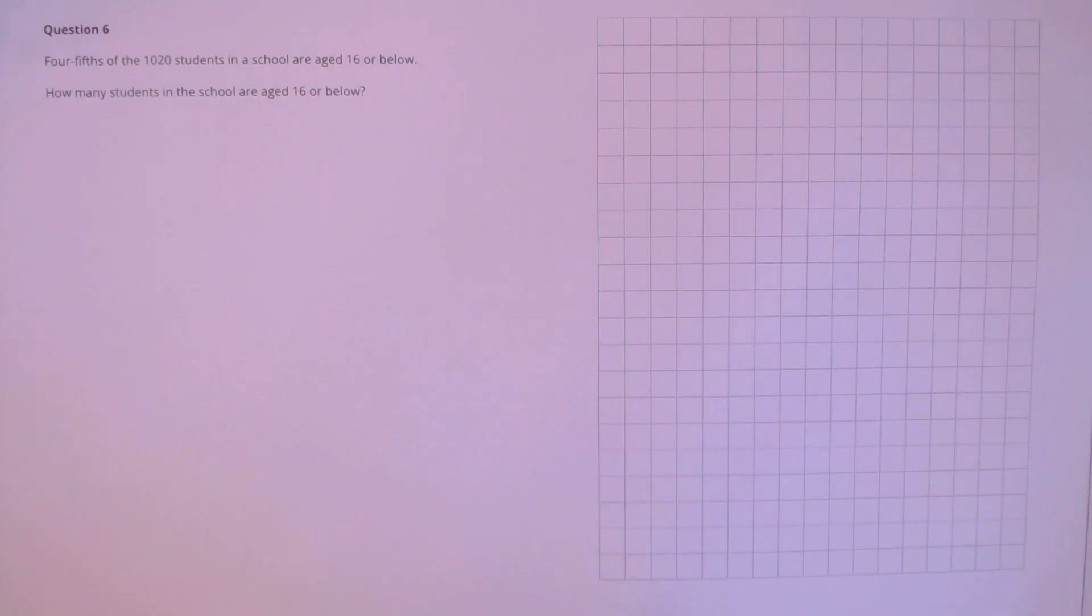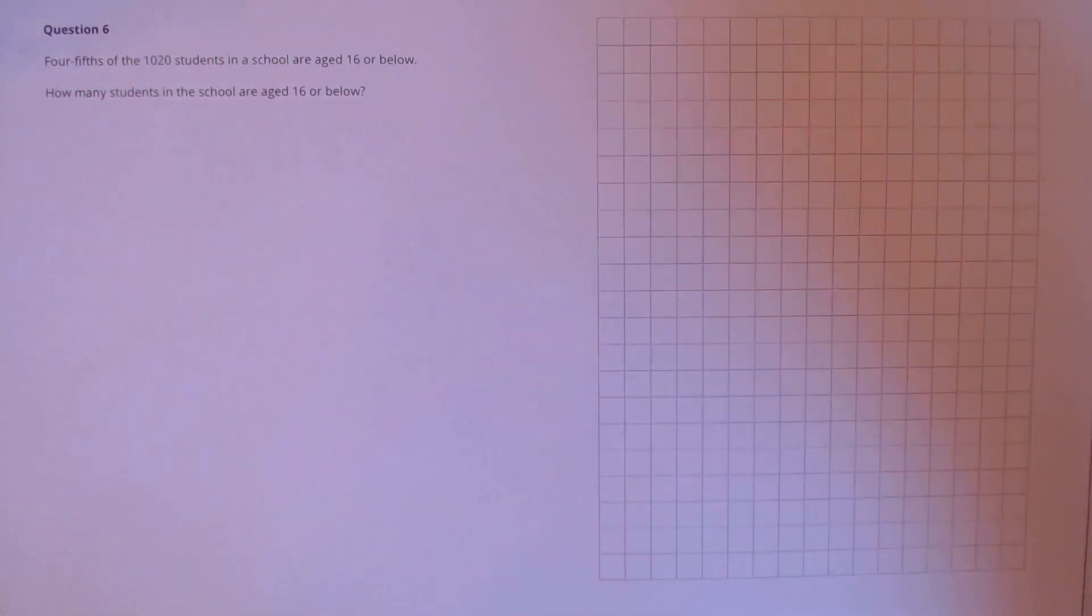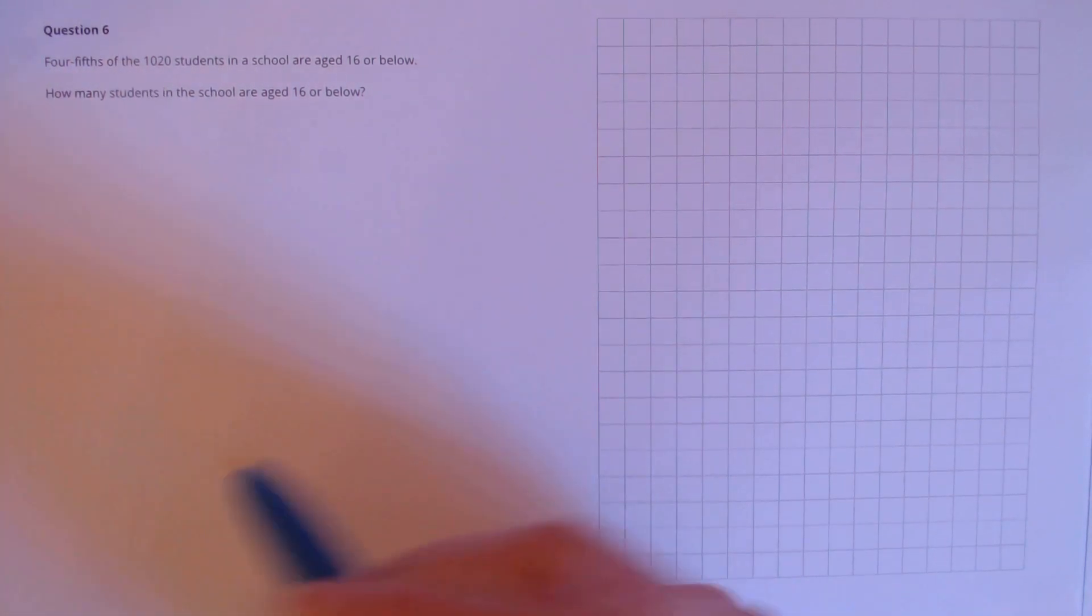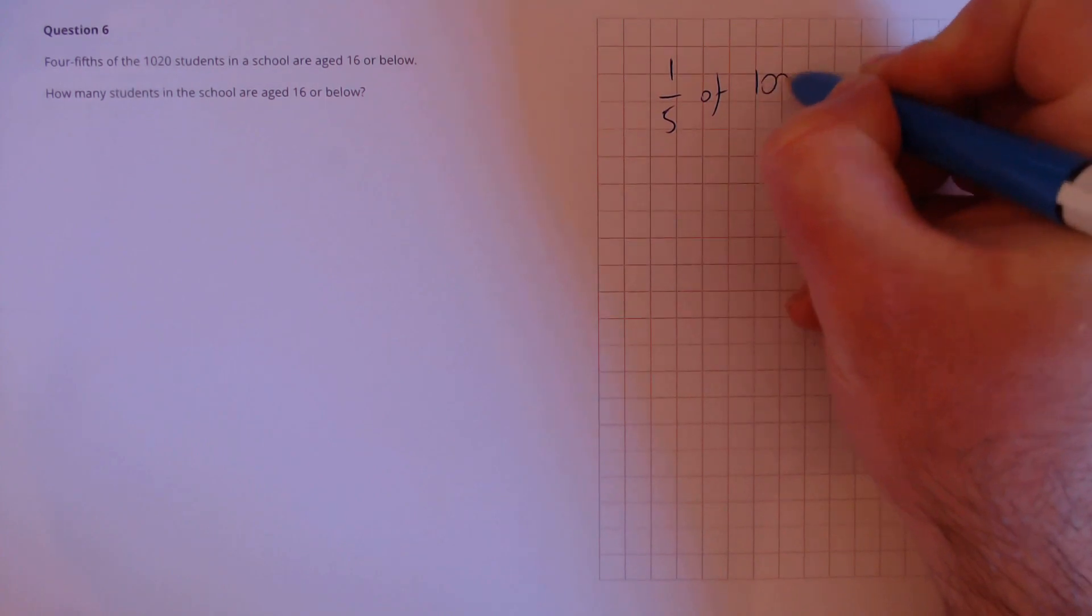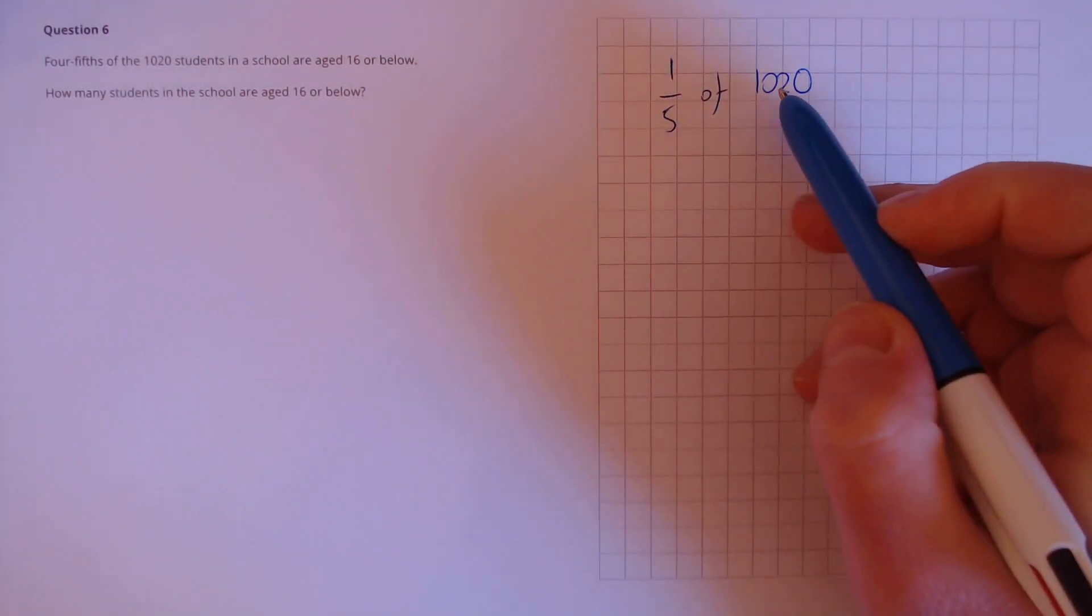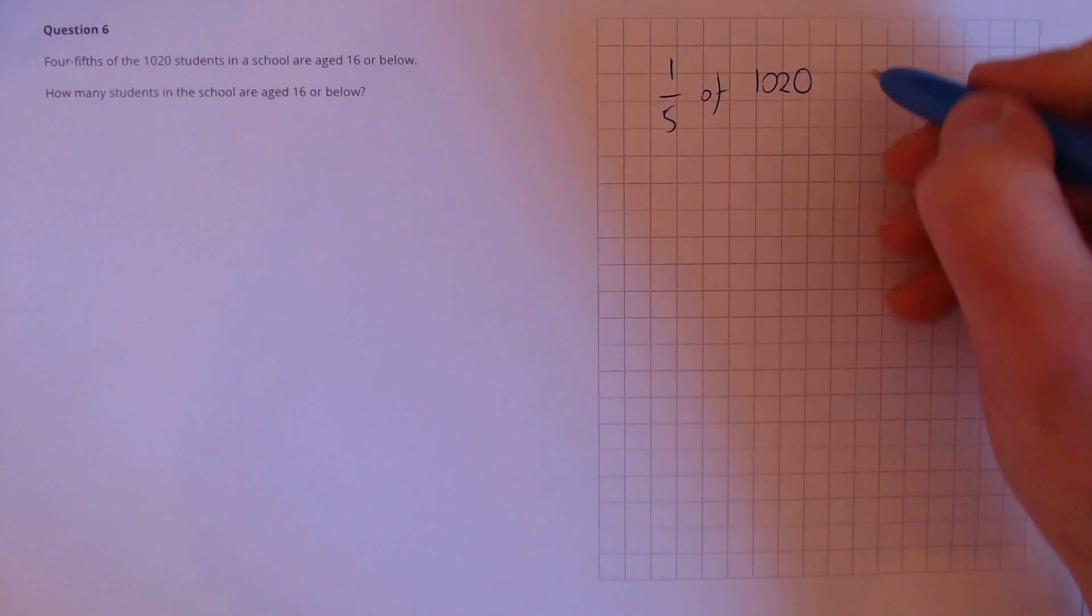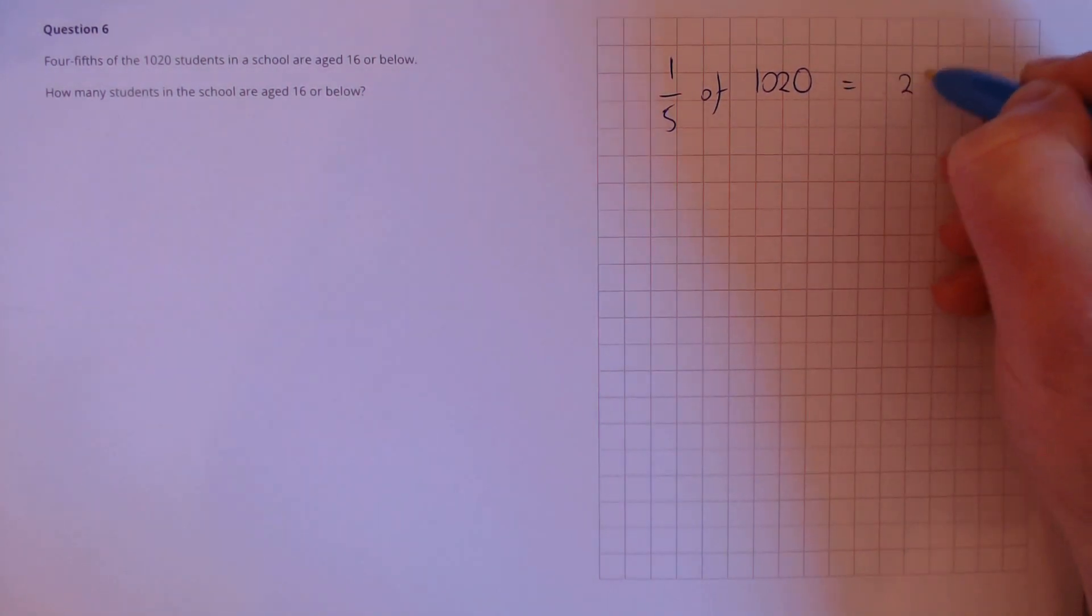Question 6: Four fifths of the 1,020 students in a school are aged 16 or below. How many students in a school are aged 16 or below? To calculate four fifths of a number, it's useful first to find a fifth of a number. So we need to do 1,020 divided by 5. That's 204.